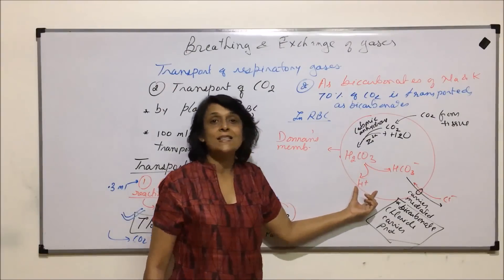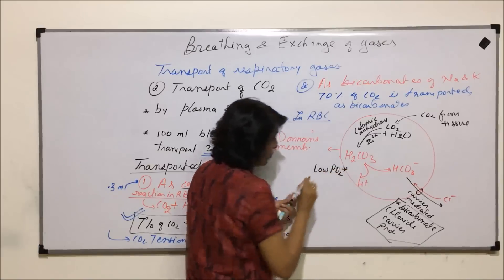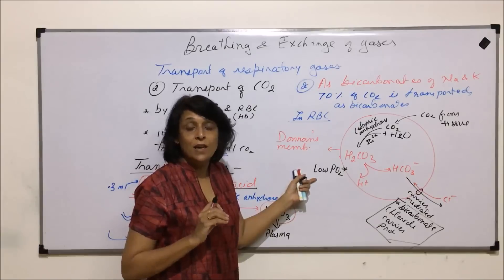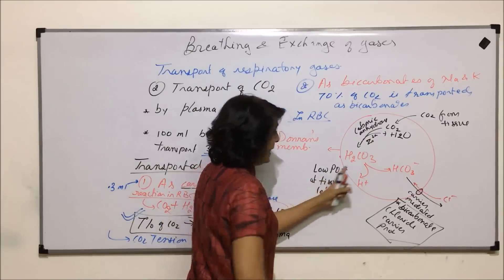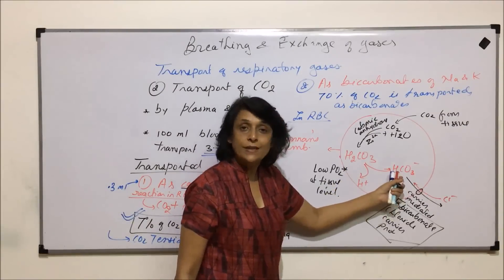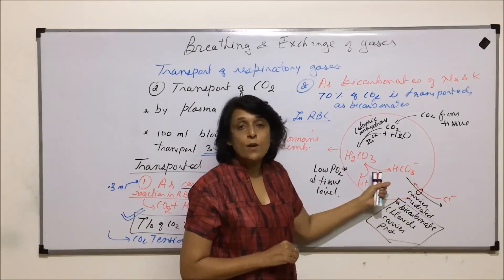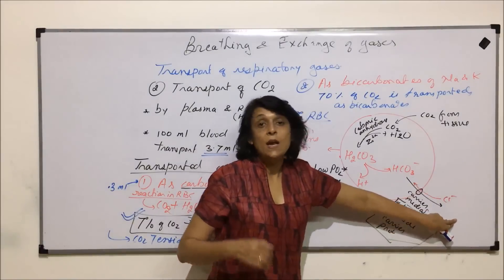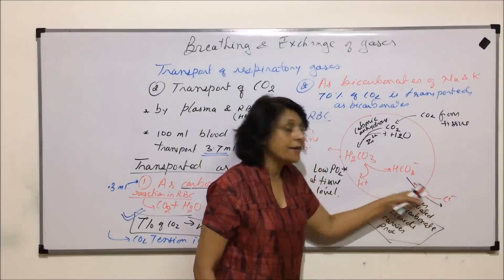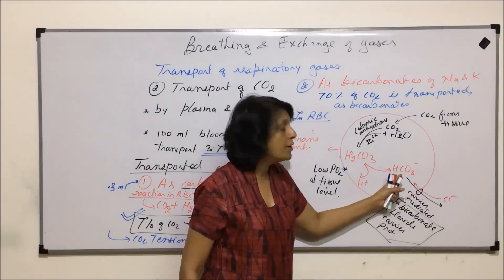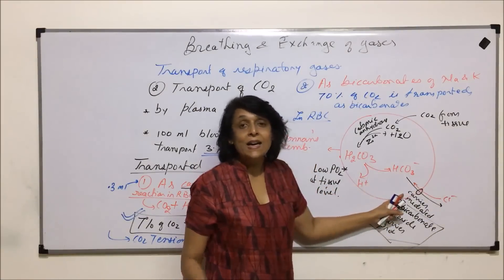The condition required for carbonic acid dissociation is low pO2 — low partial pressure of oxygen — and at the tissue level, the partial pressure of oxygen is indeed very low. So at the tissue level, carbonic acid dissociates into H+ and bicarbonate ions. Bicarbonate ions are pumped out in exchange for chloride ions. If 100 bicarbonate ions move out, there would be a higher concentration of negatively charged ions outside, which would disturb the ionic balance.